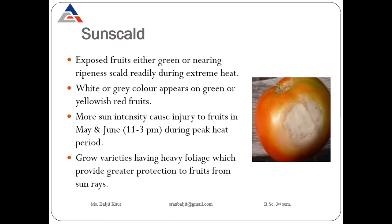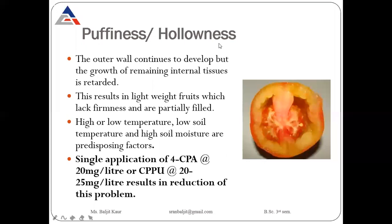Next is sunscald. When fruits are exposed to the sun directly for a longer period during extreme heat, sunscald occurs — white or gray color appearance on the yellowish or red fruits. More sun intensity causes injury to fruits in May and June during the peak heat period. Grow varieties that have heavy foliage so that heavy foliage can cover the fruits and protect them against direct sun.